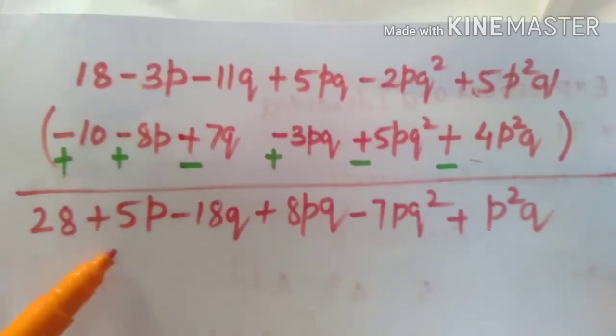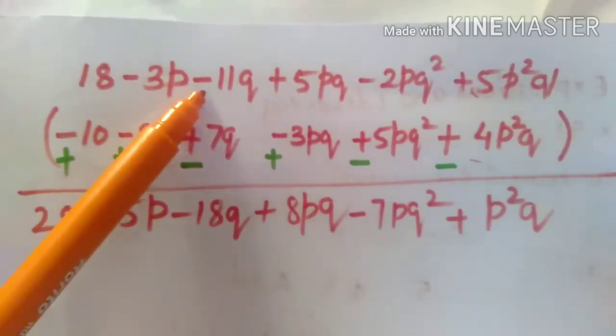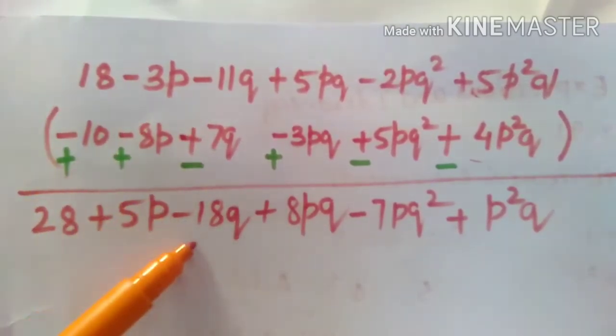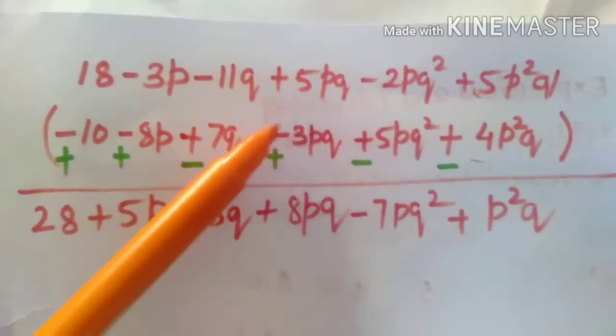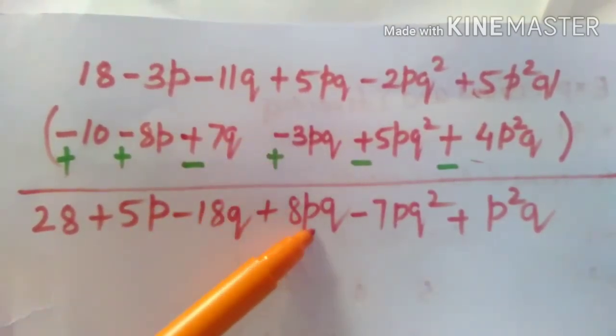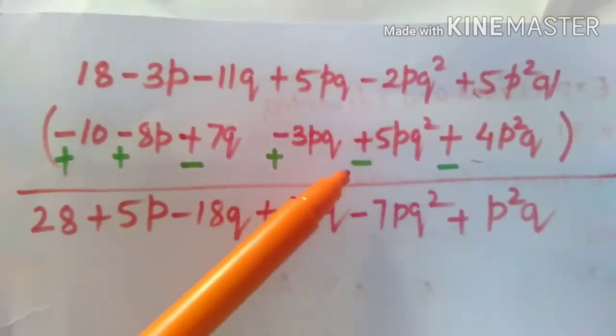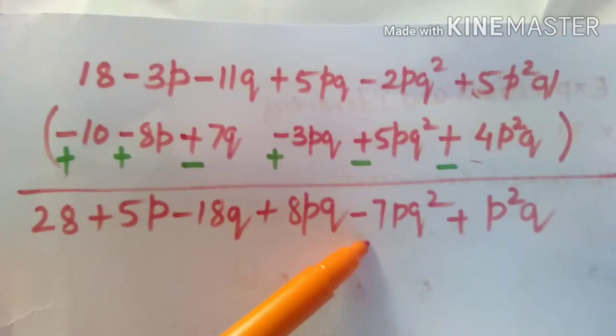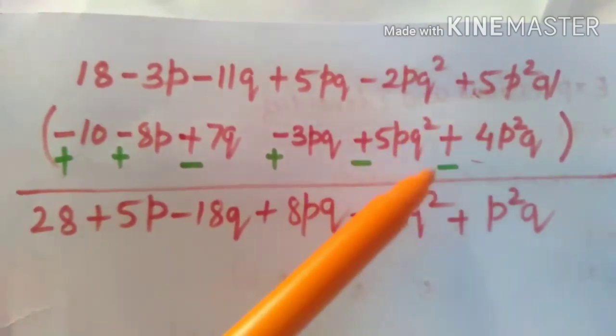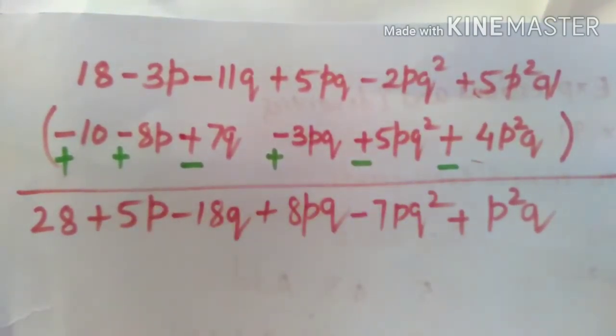that is 8 minus 3, 5P, minus 11 minus 7 is minus of 18Q. Then plus 5 plus 3 is plus of 8PQ, minus 2 minus 5 is minus of 7, then 5 minus 4 is 1. So that is how we can solve them. Just try the other questions also.